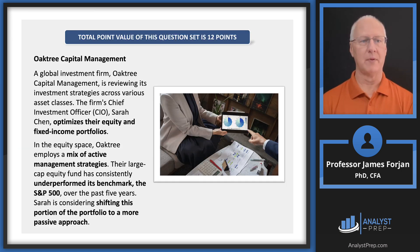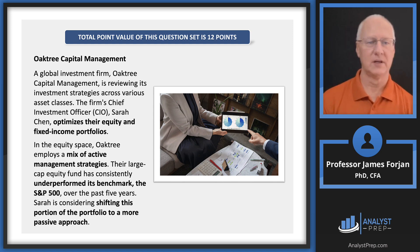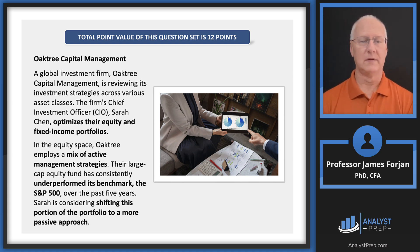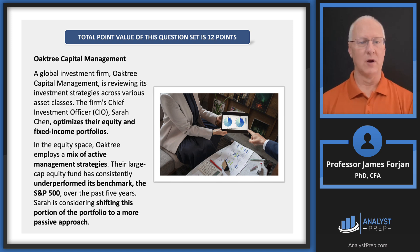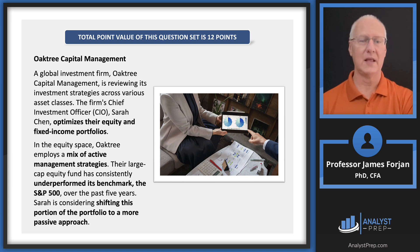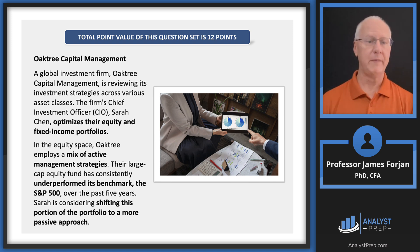Here we are at Oak Tree Capital. We have a chief investment officer — note the word 'optimizes,' optimization is part of this — managing equity and fixed income portfolios. In equities, they employ a mix of active management strategies, so we'll be interested in some kind of alpha. There are comments about the benchmark: they've consistently underperformed the S&P 500. The first question is whether that's the appropriate benchmark. The S&P 500 is appropriate for many portfolios, but maybe not this one.